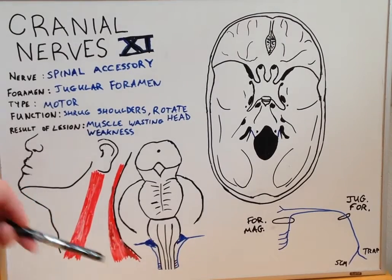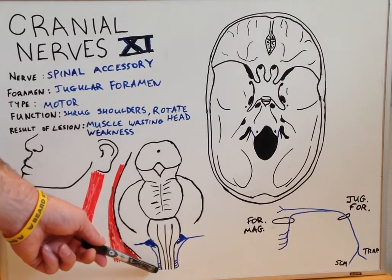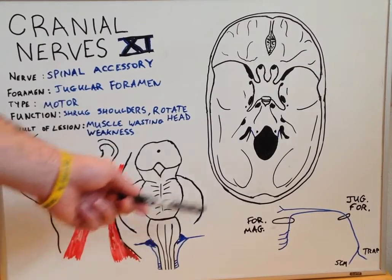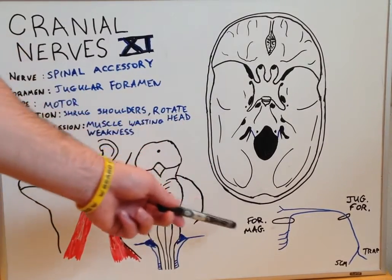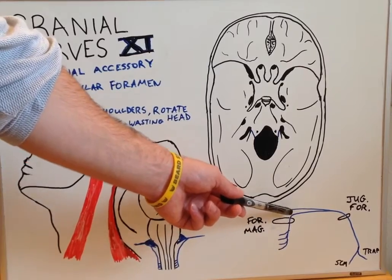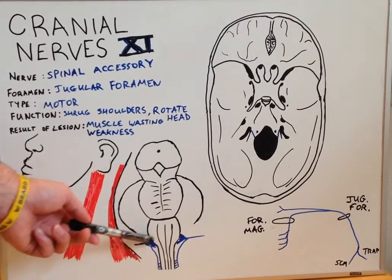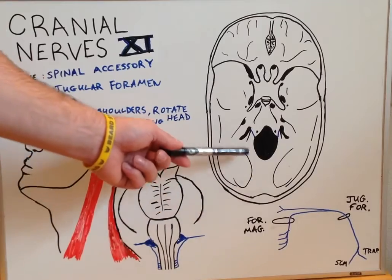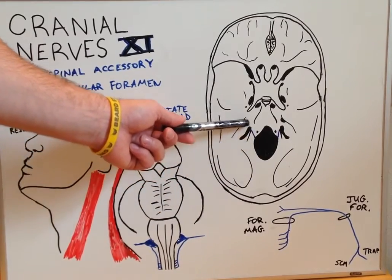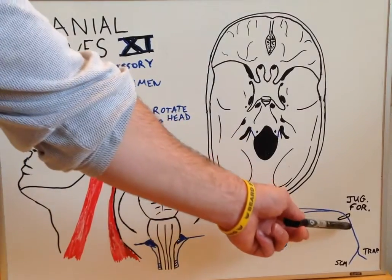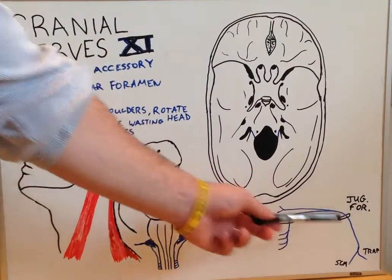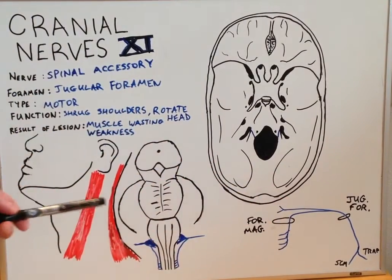The spinal aspect of the cranial nerve comes up the spinal cord, goes through the foramen magnum, where it meets up with the cranial aspect of cranial nerve 11, and together they proceed anteriorly through the jugular foramen, where they eventually innervate both the trapezius muscle and the sternocleidomastoid.